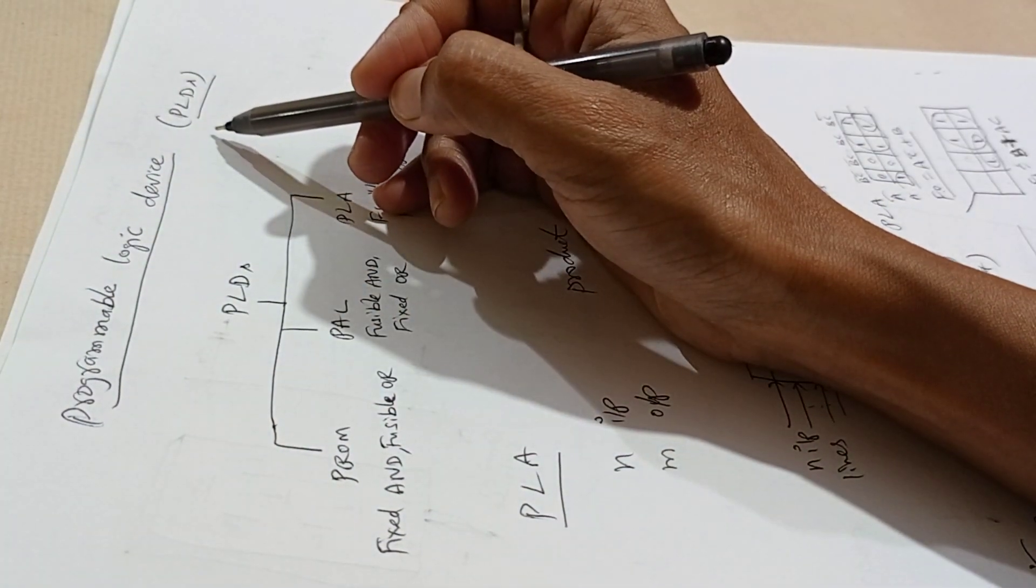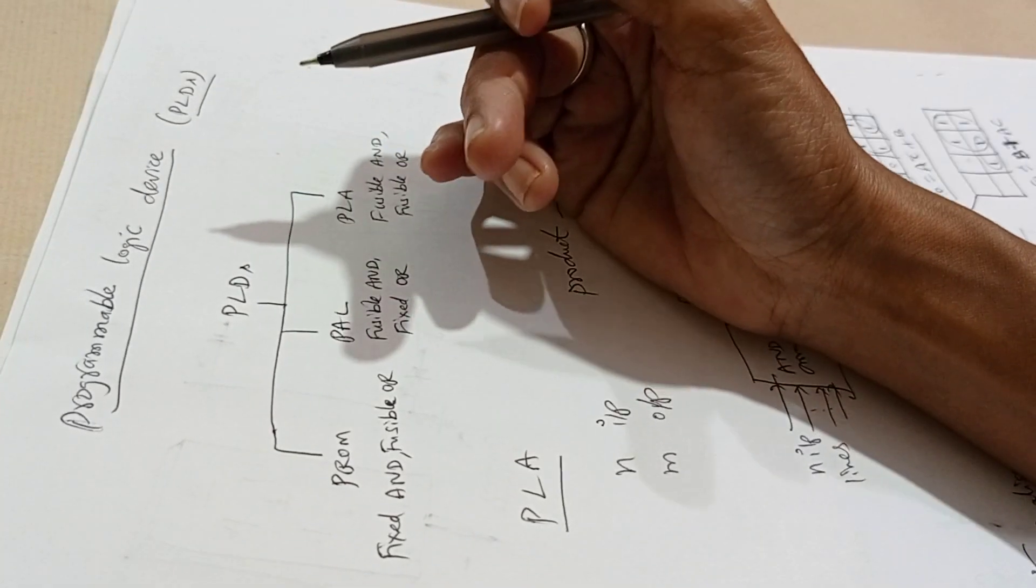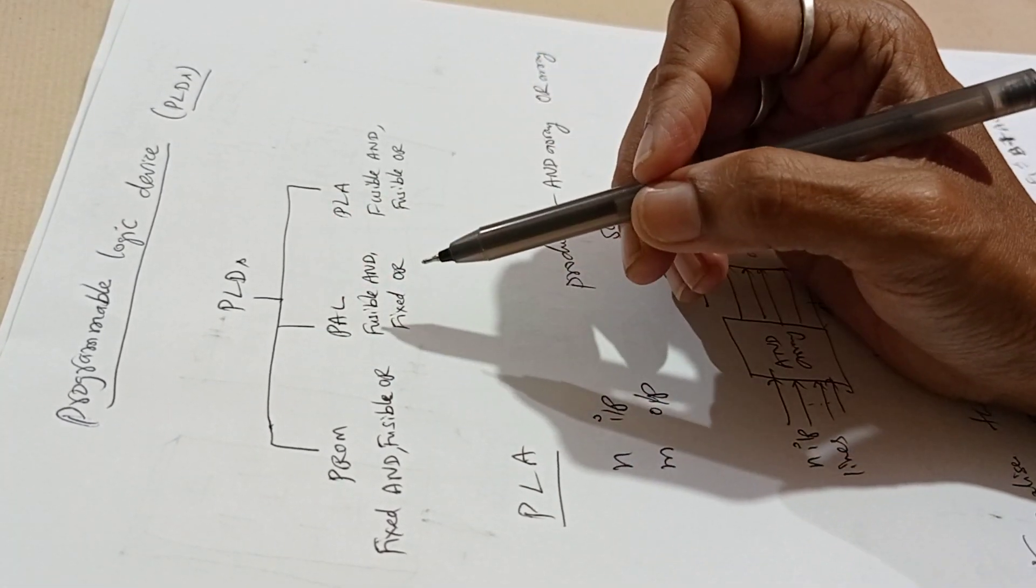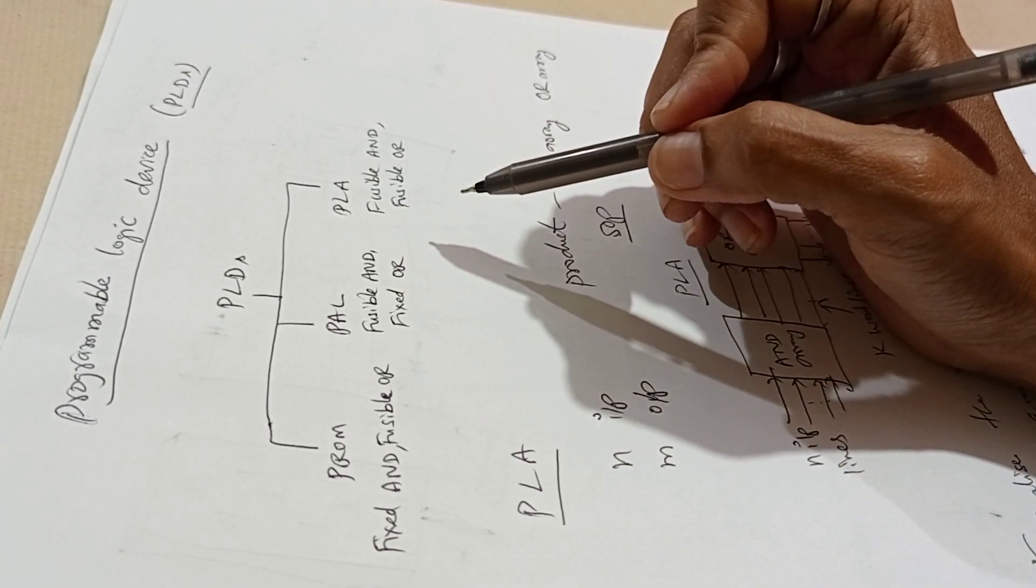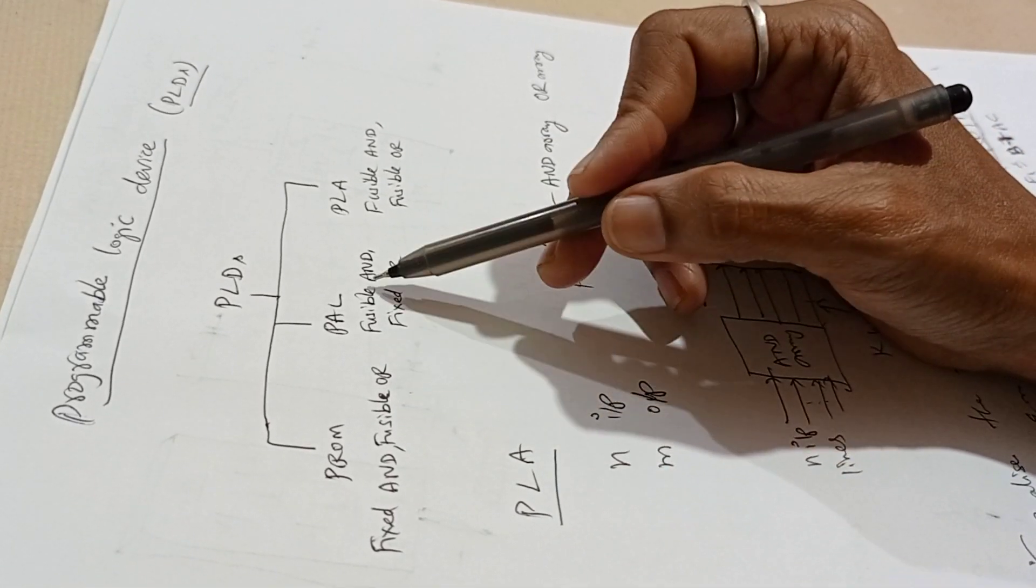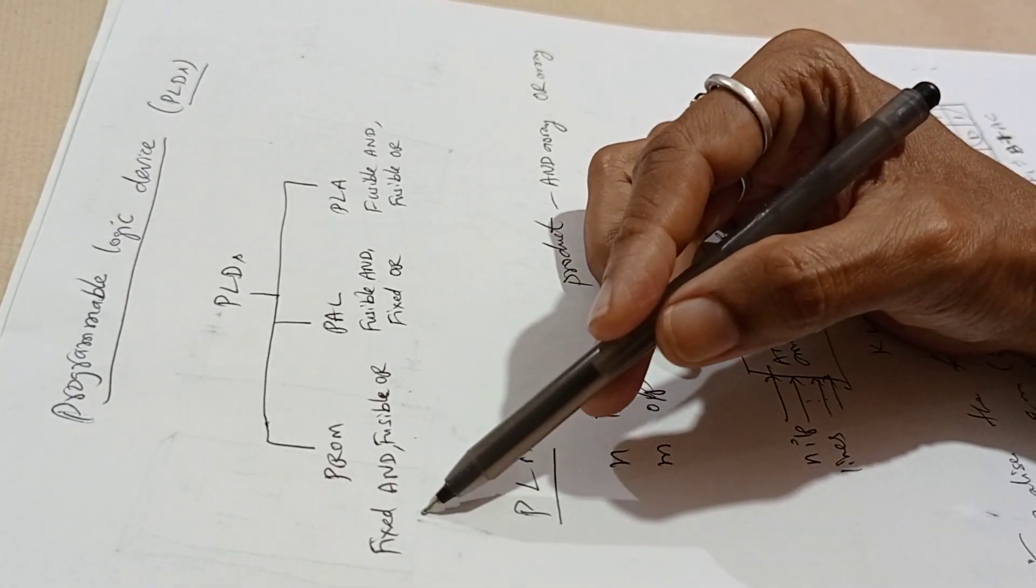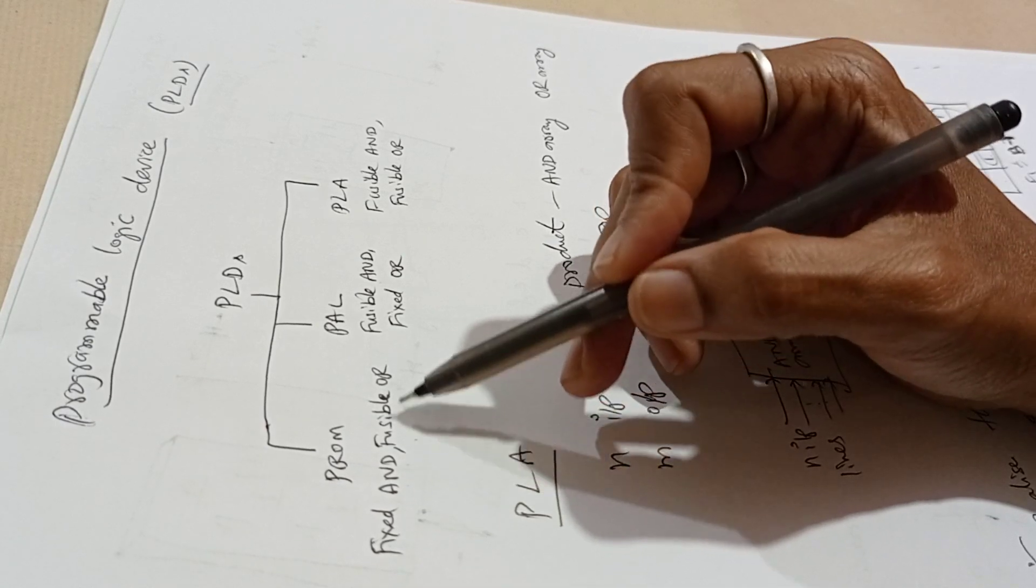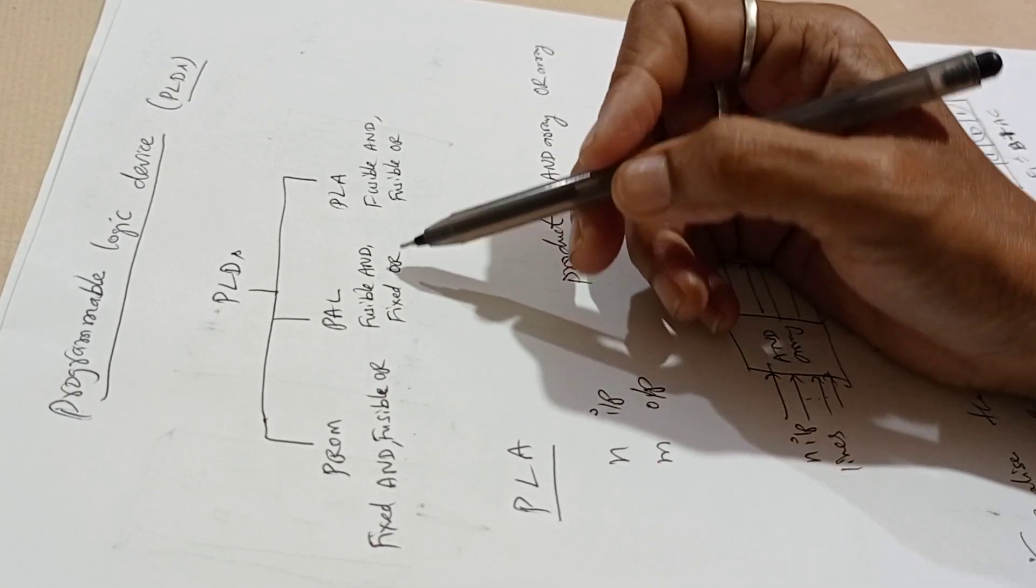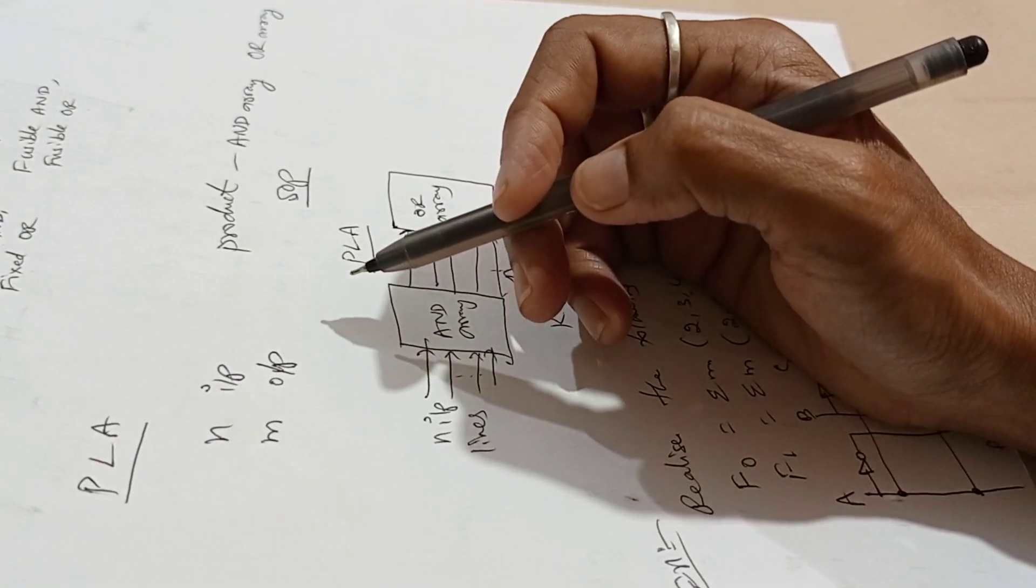Programmable logic device, PLDs, is a general name for a digital integrated circuit capable of being programmed to provide a variety of different logic functions. These are electronic components used to build reconfigurable digital circuits. We have three types: programmable read-only memory, programmable array logic, and programmable logic array. PROM has AND fixed and OR fusible. PAL has AND fusible and OR fixed. In PLA, both AND and OR are fusible.